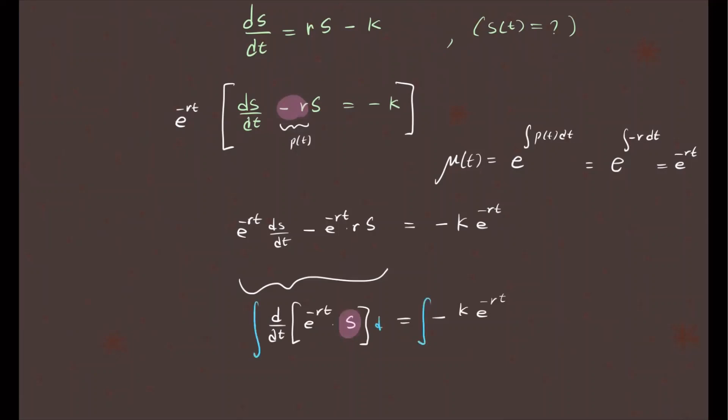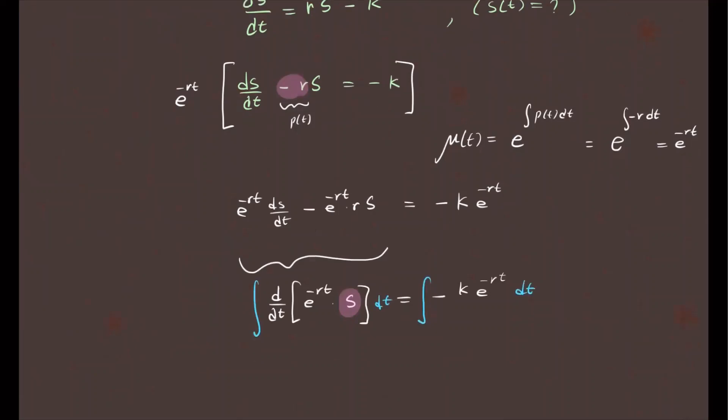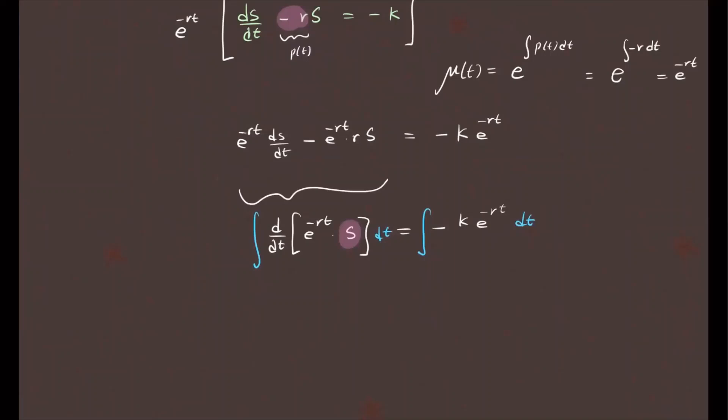So now if we integrate both sides with respect to T, here's what we obtain. On the left side, the differential and the integral cancel each other, so we have e to the negative Rt times S equals, on the right-hand side, K is a constant, R is a constant. When you integrate e to the power of negative Rt, you get negative K over negative R e to the negative Rt plus some constant C. Since K and R are both negative, I'm just going to get rid of that, so this is positive K over R.